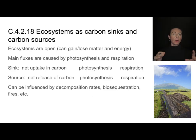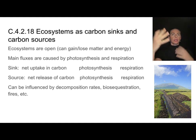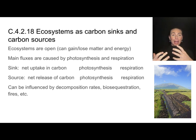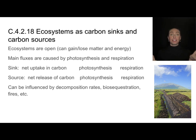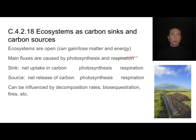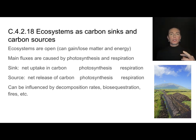Ecosystems are open, so they can gain and lose matter and energy. When we say gain or lose matter, what we're talking about is that flux. So in terms of the carbon cycle, the main fluxes are photosynthesis and respiration — those are the two big ones. And the balance between those can determine whether or not something is a carbon source or a carbon sink.